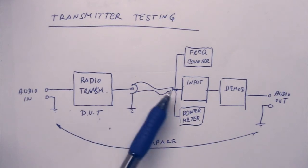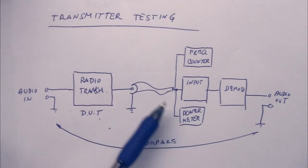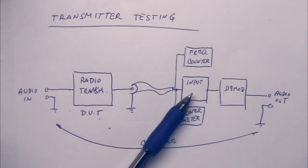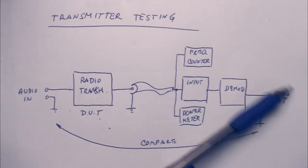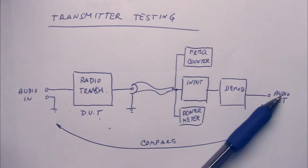And then on the antenna output, you connect all your test instruments. For example, a frequency counter, a power meter, and otherwise a demodulator. And if you have a really good demodulator, you will get your audio out, and you can do a comparison between what you send in and what you send out.